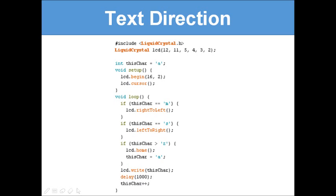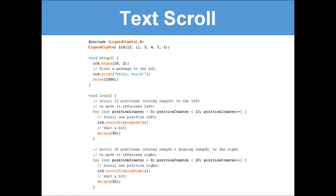So `lcd.leftToRight()` and `lcd.rightToLeft()` control text direction. Now let's look at text scroll, which scrolls text across the screen. A for-loop runs from position 0 to 15, calling `lcd.scrollDisplayLeft()` each iteration with a short delay, scrolling the text 13 positions left. Then another loop runs up to 29, calling `lcd.scrollDisplayRight()` to scroll back. The two key functions are `lcd.scrollDisplayLeft()` and `lcd.scrollDisplayRight()`.